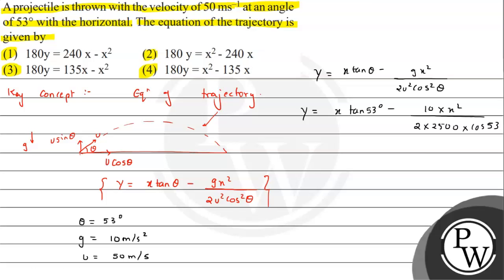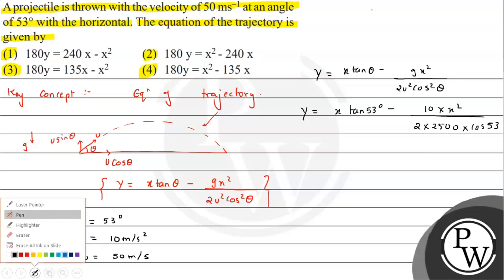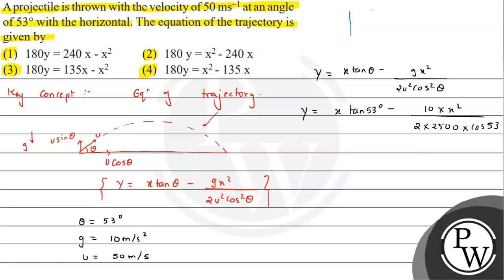Now we recall the triangle values. This is a right-angle triangle — a 3-4-5 Pythagorean triplet. If this angle is 37° and that angle is 53°, and this is 90°, then for 53°: sin 53° = 4/5 and cos 53° = 3/5. Similarly, for 37°: sin 37° = 3/5 and cos 37° = 4/5.